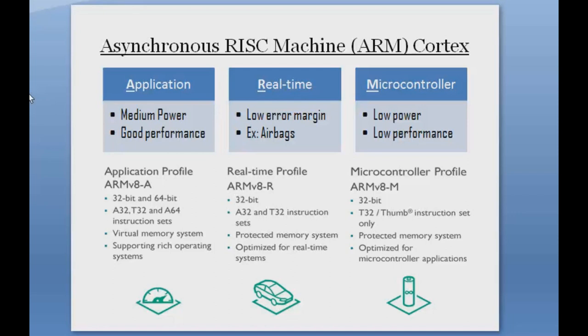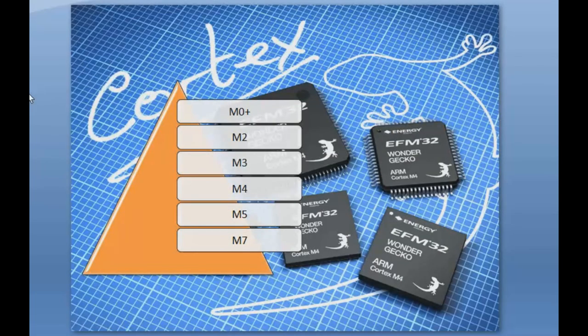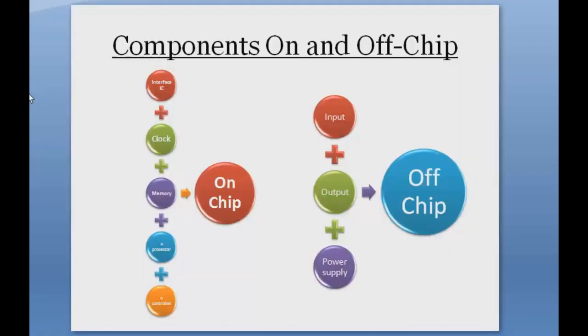Cortex-R is most widely used for optimization in real-time systems. The most famous series is the Cortex-M, which is a microcontroller family. It is 32-bit and most widely used for microcontroller applications, which is what we use in embedded systems. The board we are going to use has the Cortex-M0+ series. The Cortex-M series has six versions: M0+, M2, M3, M4, M5, and M7 — there is no M1 or M6. The Cortex-M0+ is the most famous of these.